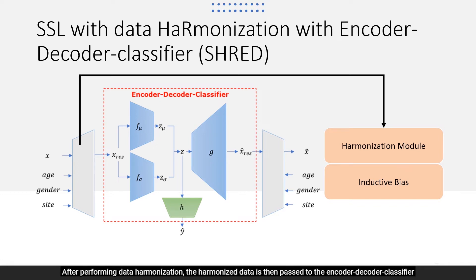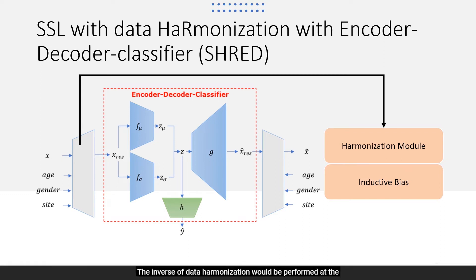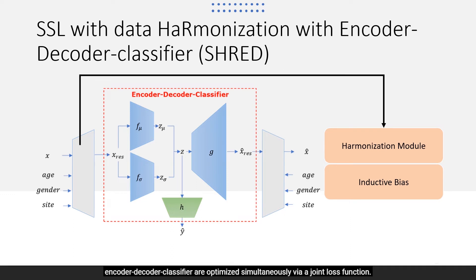After performing data harmonization, the harmonized data is then passed to an encoder-decoder classifier model, which is based on a variational autoencoder, to perform disease classification and data reconstruction. The inverse of data harmonization would be performed at the output of the decoder to obtain the final reconstructed data. During training, both the harmonization module and the encoder-decoder classifier are optimized simultaneously via a joint loss function, removing the need to separate these into two steps.